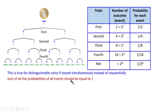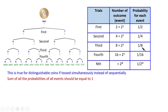The sum of probabilities of all events should be equal to one. The probability of getting one head or tail is half, and there are two such events, so half plus half is one. For the second toss, you have four events each with probability one by four, so four times one by four is one. Similarly, for the third toss you have eight events each with probability one by eight, so one by eight times eight gives one again.